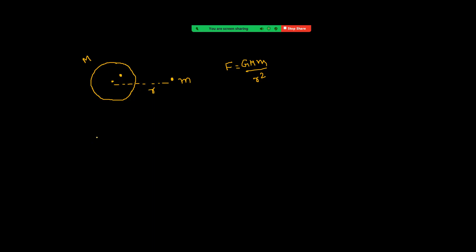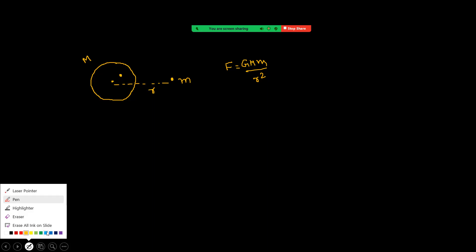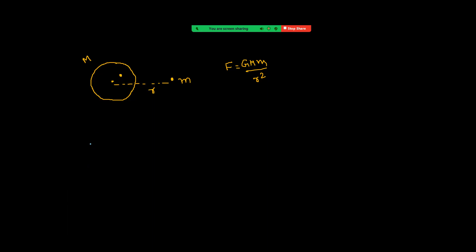Now see how to apply this. For example, we are taking a solid sphere with radius R and mass M, with uniform distribution of mass. If I am taking an outside point mass, what is the gravitational force by the solid sphere on this point mass? Here we have learned that we can replace the mass of the shell with a point mass at its center of mass.